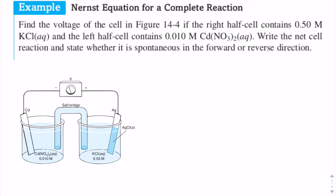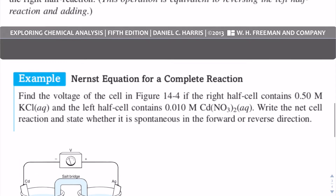Hello, everyone. Today we're going to do an example question using the Nernst equation for calculating the voltage for a complete reaction. Let's look at this question. You're given a figure with certain concentrations for the electrolytes in the half cells, and it's asking you to write out the net cell reaction and see if it's spontaneous in the forward or reverse direction. To do all of this, you have to follow steps to calculate the voltage for the whole cell.